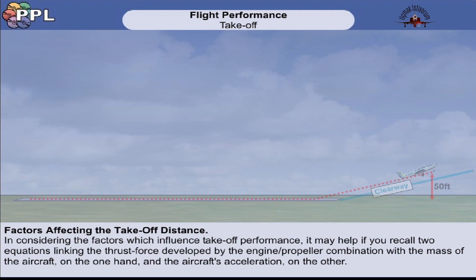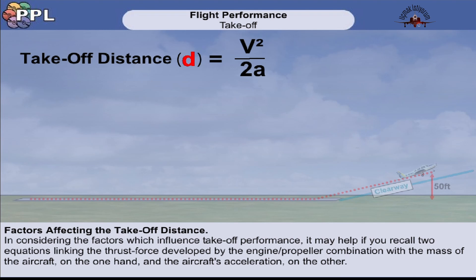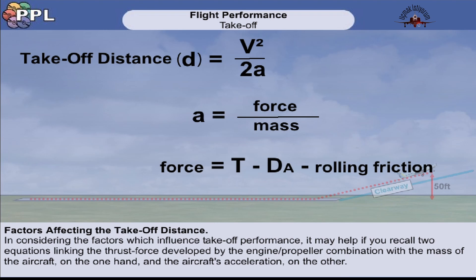Next we will examine how the take-off distance is calculated and displayed to the pilot. In order to do this, let us examine in detail the formula that is used to calculate the take-off distance. D is the distance required from rest to reach a specified speed V, with a given acceleration force A. Acceleration itself is force divided by mass. The force is thrust, minus aerodynamic drag, and minus the wheel drag.